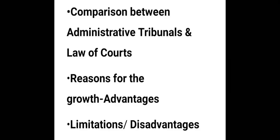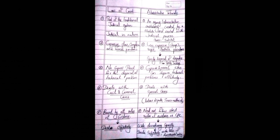Comparison between Administrative Tribunals and Courts of Law. Number 1: a Court of Law is part of the traditional judicial system — it is judicial in nature. On the other hand, an Administrative Tribunal is an agency created by a statute and vested with judicial powers, meaning Administrative Tribunals are quasi-judicial in nature. Number 2: the procedures in a Court of Law are expensive, slow, complex, and formal. On the other hand, Administrative Tribunals have less expensive, rapid, and flexible procedures, which results in speedy disposal of disputes — that is, speedy justice is available through Administrative Tribunals.